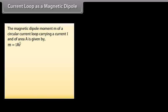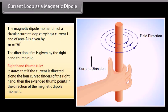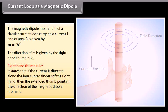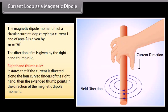Current loop as a magnetic dipole: the magnetic dipole moment M of a circular current loop carrying current I and of area A is given by M equals I times A, with direction given by the right-hand thumb rule. The right-hand thumb rule states that if the current is directed along the four curved fingers of the right hand, then the extended thumb points in the direction of the magnetic dipole moment.